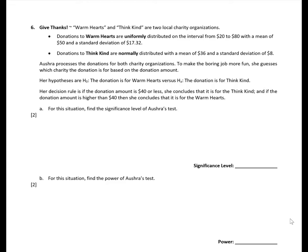OSHRA processes the donations for both charity organizations. To make the boring job more fun, she guesses which charity the donation is for based on the donation amount. Her hypotheses are the null — the donation is for Warm Hearts — versus the alternative — the donation is for Think Kind. Her decision rule is: if the donation amount is $40 or less, she concludes it is for Think Kind; if the donation amount is higher than $40, she concludes it is for Warm Hearts.